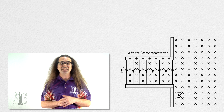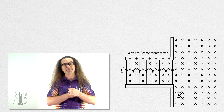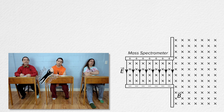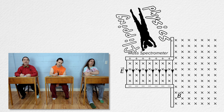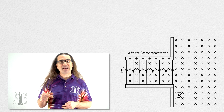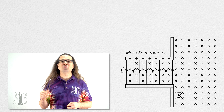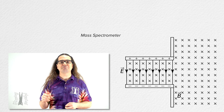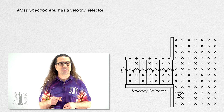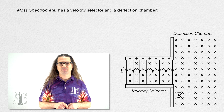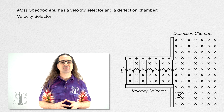Good morning. Let's learn about the mass spectrometer. In a mass spectrometer, you have two different main parts: the velocity selector and the deflection chamber. Let's start with the velocity selector.